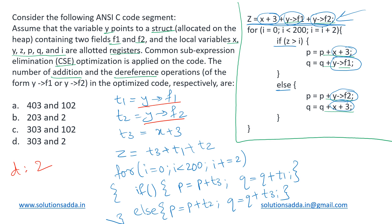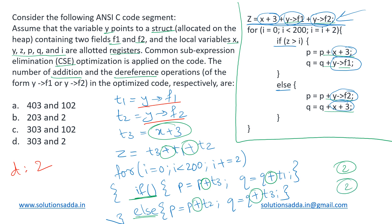Now let us calculate the number of addition operations. Outside the loop we can count: one, two, three — so three addition operations outside the loop. Now moving inside the loop: either the if-part or the else-part executes at a time. If the if-part executes, there are two addition operations (one and two). If the else-part executes, again two addition operations. So in every iteration we perform only two addition operations.